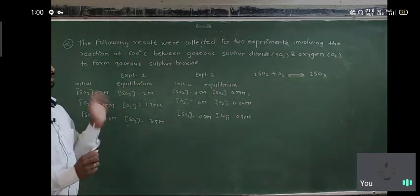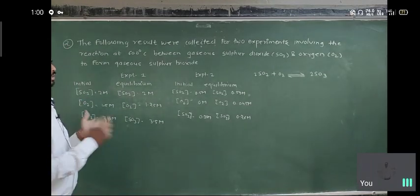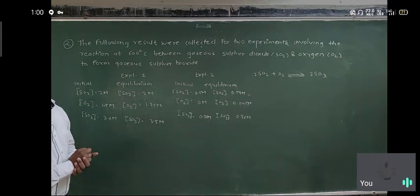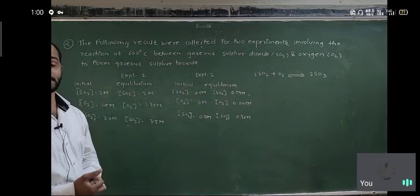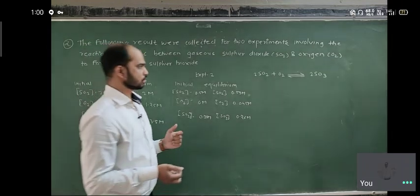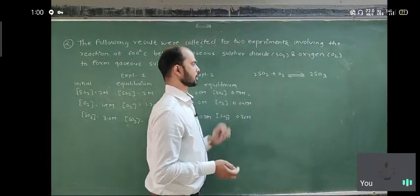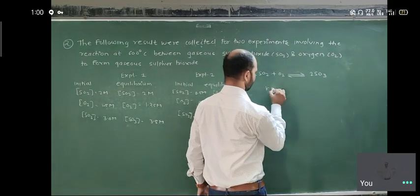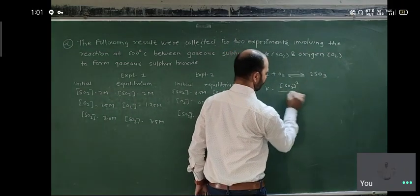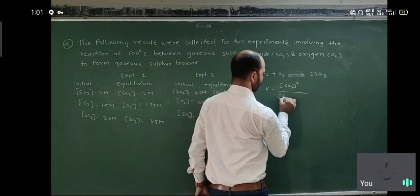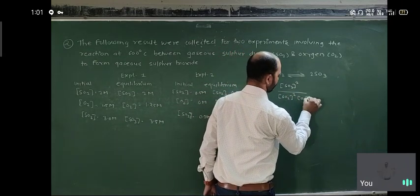We use this data to find out the value of the equilibrium constant. We are going to calculate K1 and K2 for both experiments and check whether the values are the same or different. For this reaction, K is equal to concentration of SO₃ squared, upon concentration of SO₂ squared times concentration of O₂.